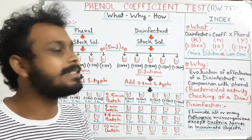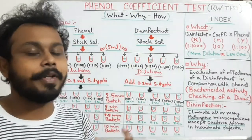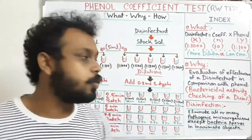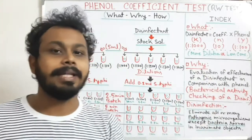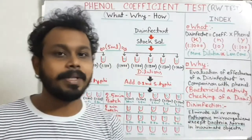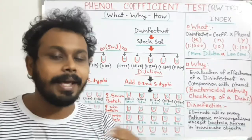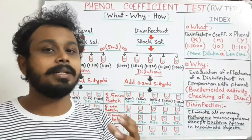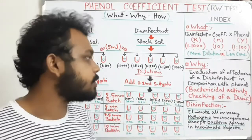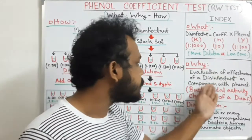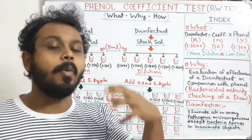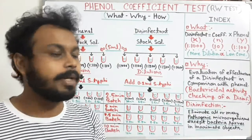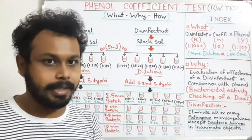So first we will discuss why this phenol coefficient test is performed. This test is performed to evaluate the effectiveness of a disinfectant — that means how much it is effective against microorganisms to kill them — in comparison with phenol. By this way we can evaluate an unknown disinfectant.